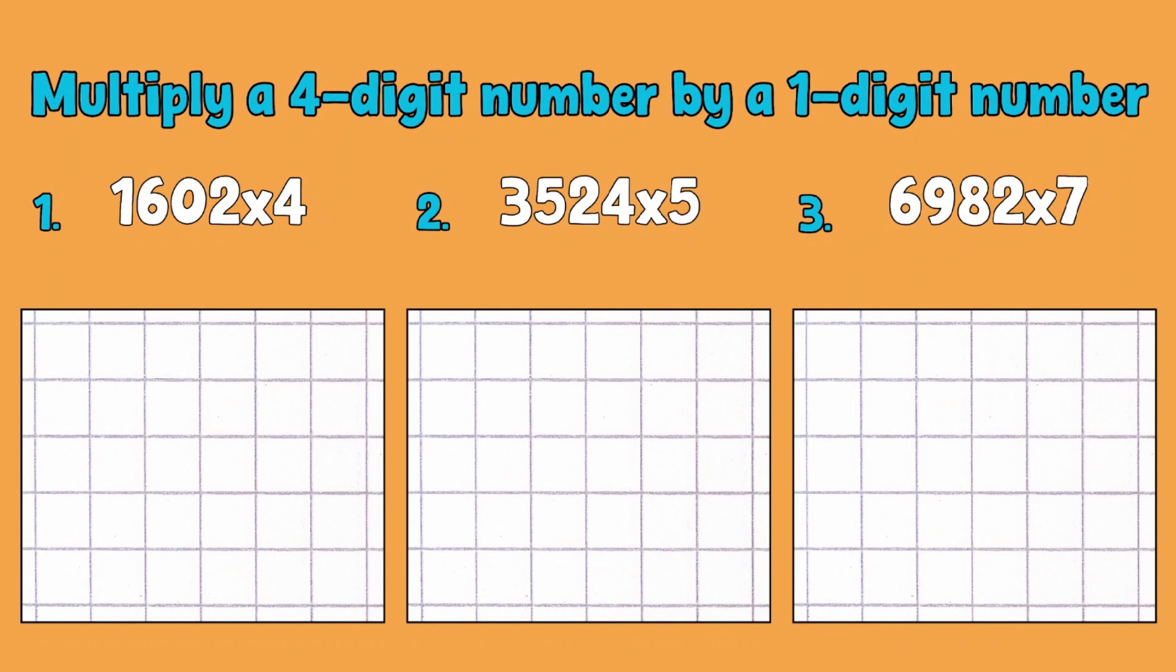So we're going to start with 1602 multiplied by 4. Essentially what we're trying to do is make 1602 four times larger. I'm going to show you how to set this up in the short division method, and then we'll have a go at the next few examples as well. I'm just going to pop in some place value headings so we can really clearly see exactly what we're doing today. So I've got my thousands, hundreds, tens, and ones.